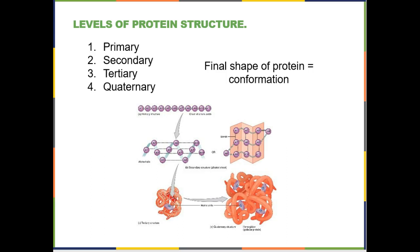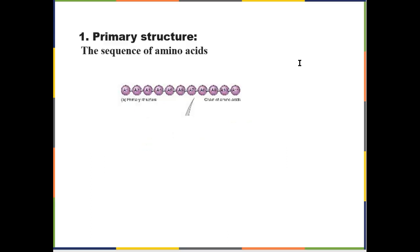We get to levels of protein structure: primary, secondary, tertiary, and quaternary. The final mature shape of a protein — the shape it needs to have in order to perform its function — is called the conformation. Primary structure is simply the sequence of amino acids.